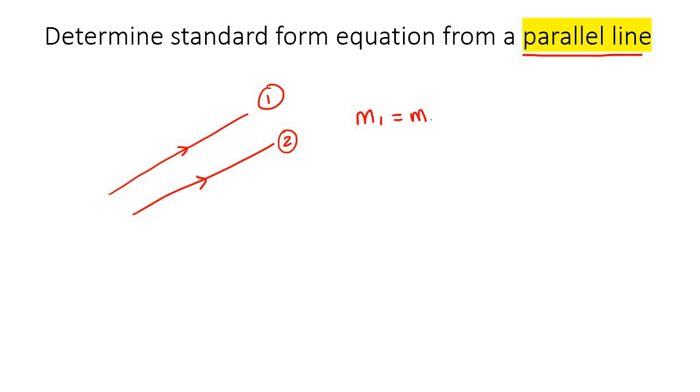So the gradient of line 1 is the same as the gradient of line 2, or you could say the slope of line 1 is the same as the slope of line 2.